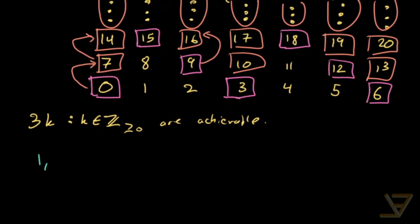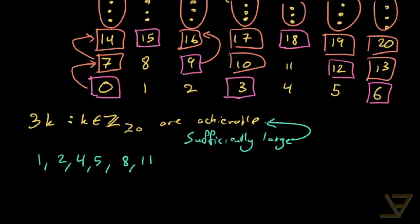We're just left with 1, 2, 4, 5, 8, and 11. So these are the only possibilities for non-achievable numbers. So all sufficiently large numbers are achievable, which means the numbers that are not achievable are bounded above. And we don't have to look very far to realize that all of these are not achievable.